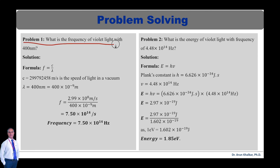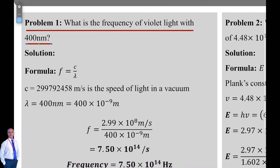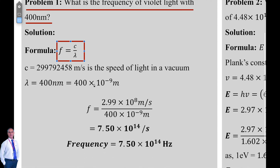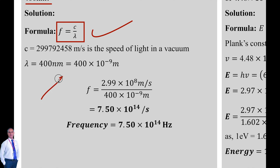Problem number one: What is the frequency of violet light with 400 nanometer? As we have already explained in the electromagnetic waves topics, the relation between frequency, speed of light, wavelength and energy. The formula is f = c / λ, where c is the speed of light that is 2.99 × 10⁸ meter per second.